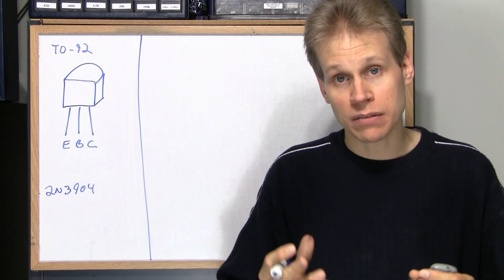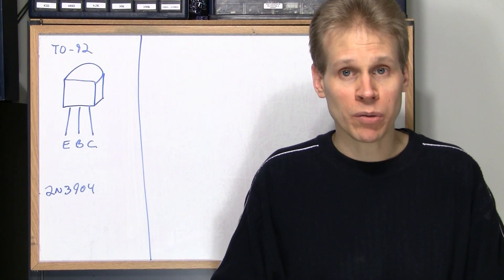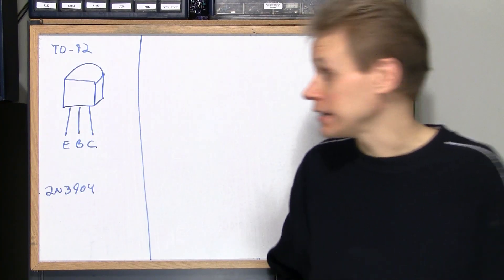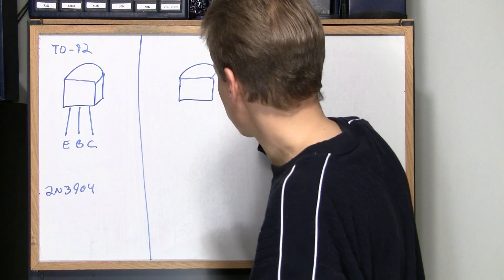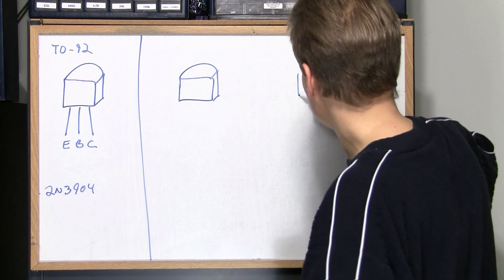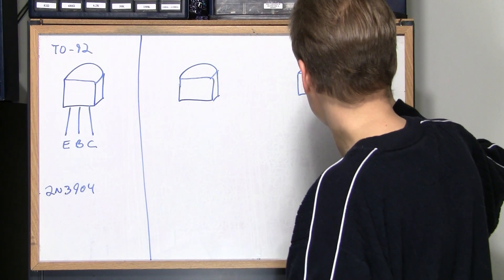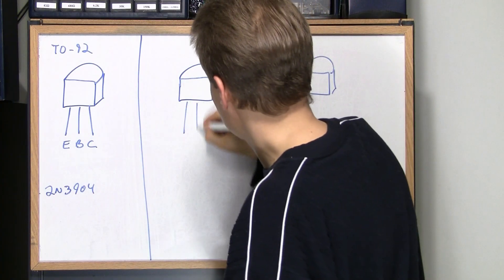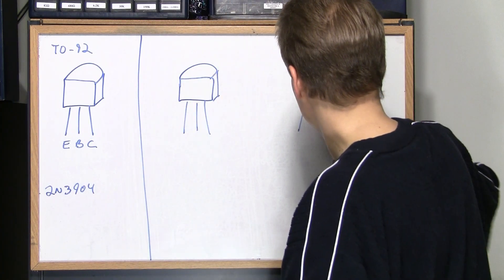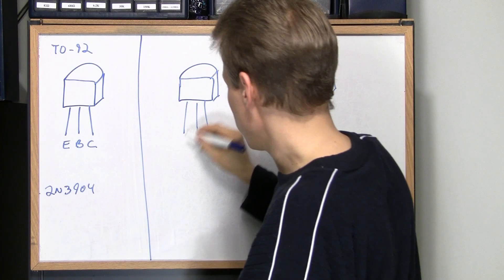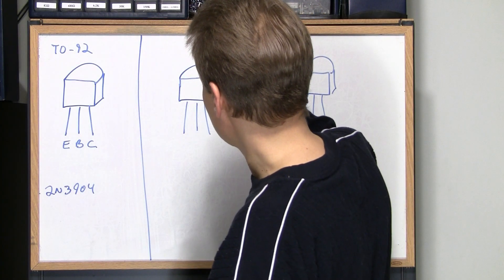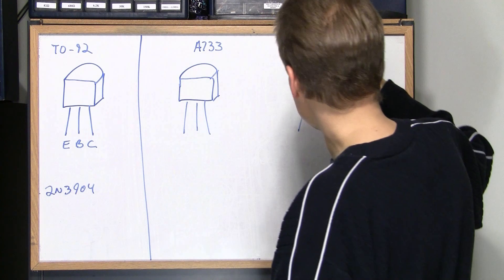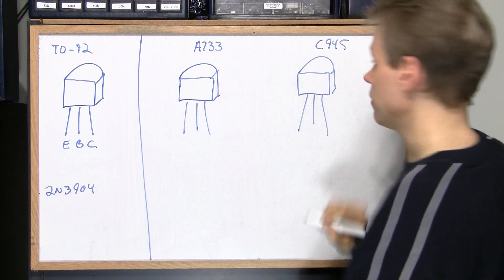There's a better system, it's called the 2S system and thankfully that system is quite a bit more prevalent I find and it helps troubleshooting quite a bit. So again we have our transistor here and I'll draw another one over here. So this transistor here, we'll call this an A733 and we'll call this a C945.